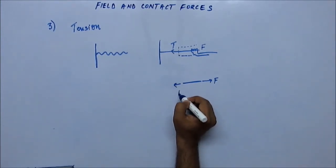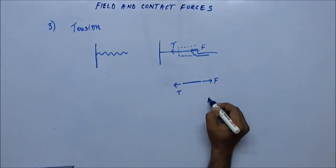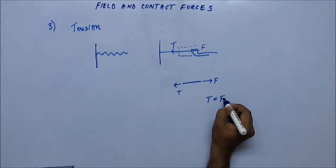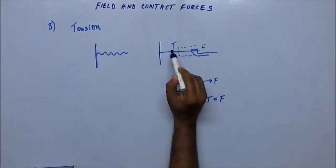There is some force F acting towards the right by our hand, and there is some tension in the string acting towards the left. The string is not going anywhere, so the net external force on the string should be zero. Since it is at rest, the net force should be zero, which means the tension should be equal to the applied force F.